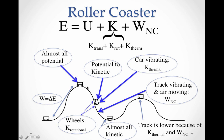As it started to go down the hill, potential energy was turning into kinetic energy. That kinetic energy was actually made up of a couple of different parts: there is translational kinetic energy — the linear movement of the car — and also the rotation of the wheels, which you could hear. There was also thermal energy going into the vibration of the wheels and the car, which you could hear as well. You could also hear the air molecules moving as it went down.